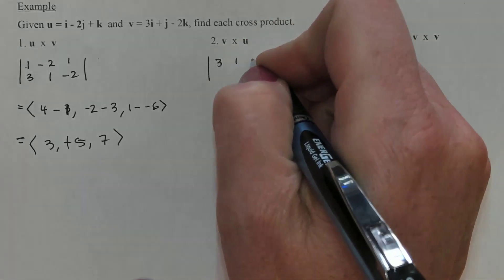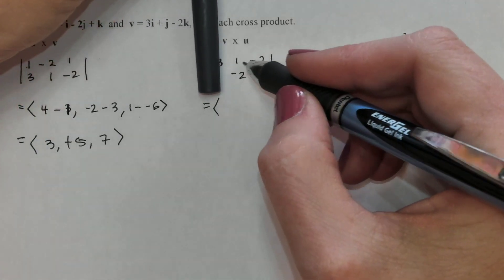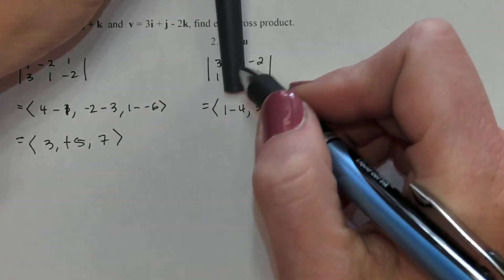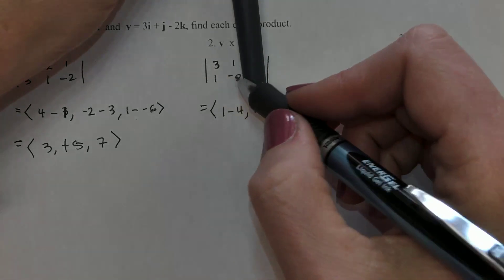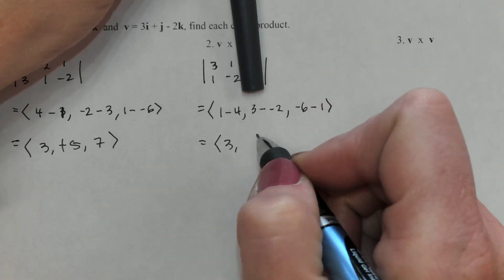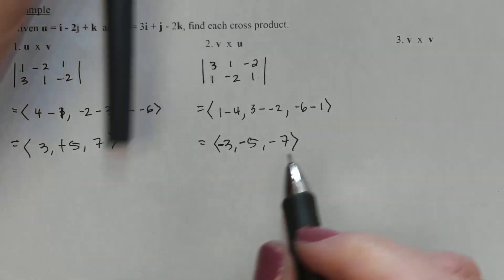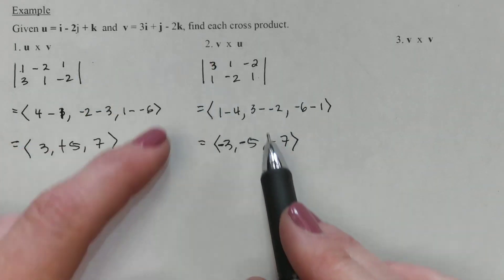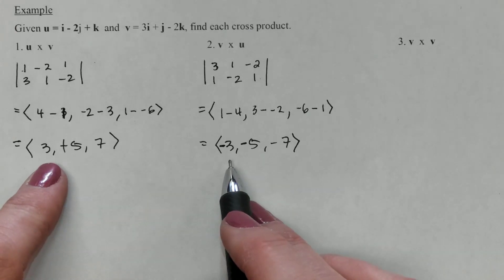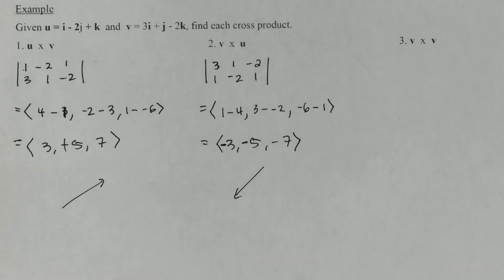If I reverse the two vectors and put V on top of U: covering up the first column I get one times one is one, minus negative two times negative two is four. Here I get three times one is three, minus negative two times one is negative two. Last one: three times negative two is negative six, minus one times one is one. Simplifying gives negative three, five, negative seven. Don't forget on the middle term you always flip the sign. So when you do a cross product and then flip the order, you end up with the exact opposite vector — every sign changes, but the numbers stay the same.